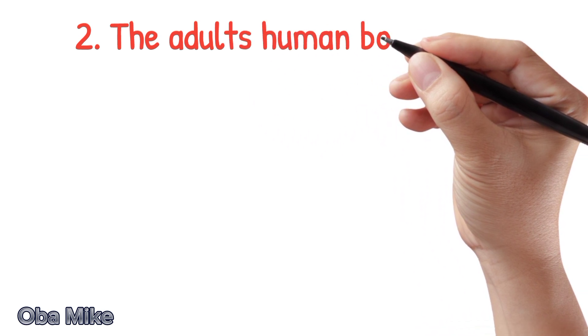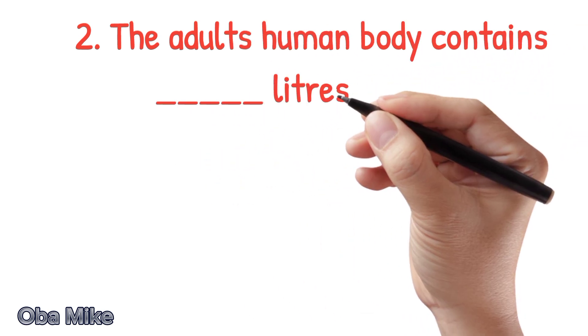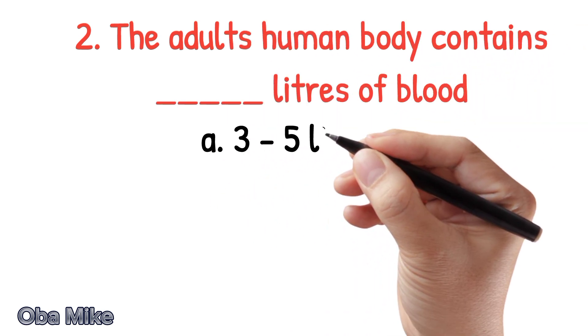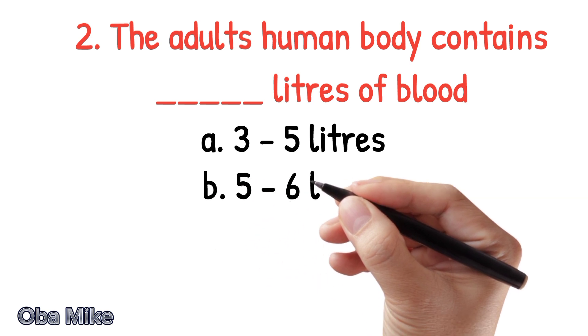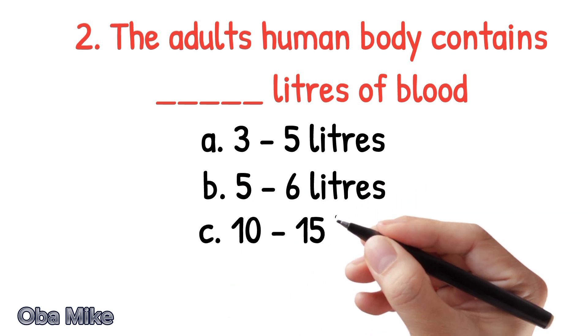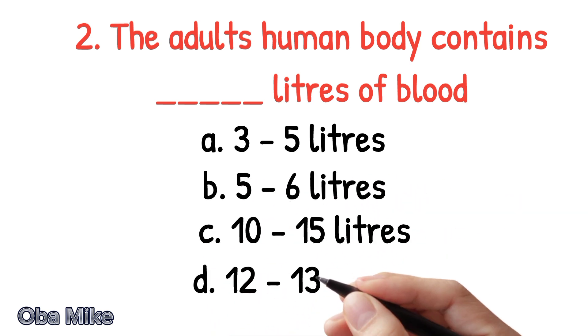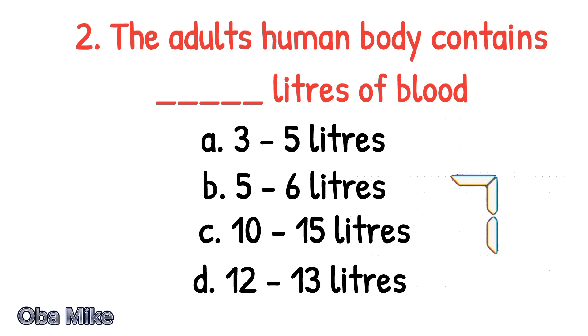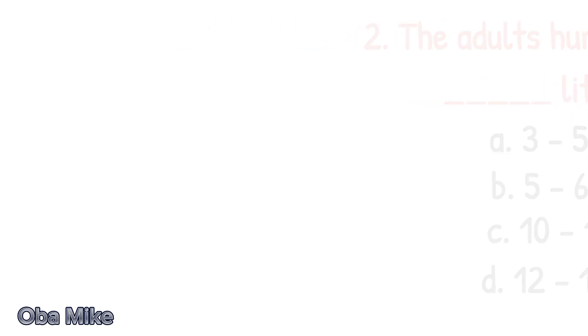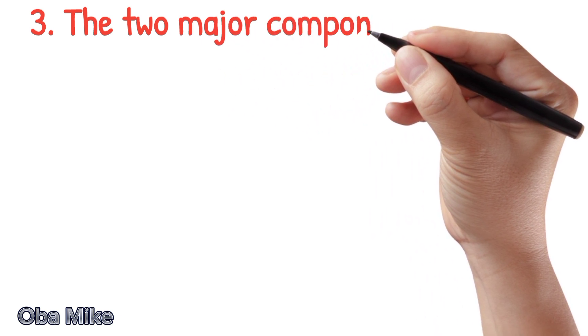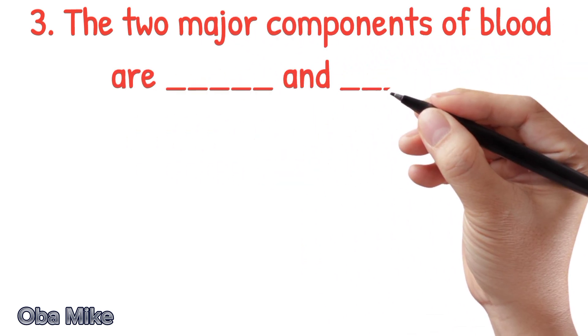The adult human body contains dash liters of blood. A. 3-5 liters. B. 5-6 liters. C. 10-15 liters. D. 12-13 liters. The correct answer is B. 5-6 liters.